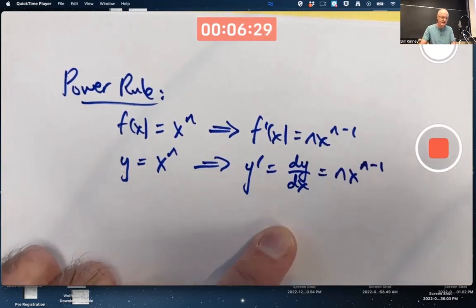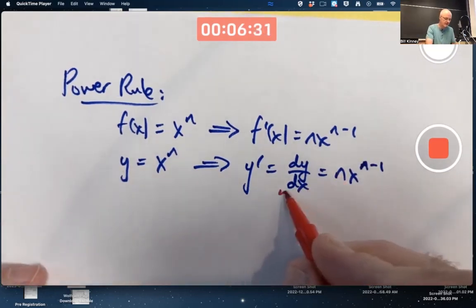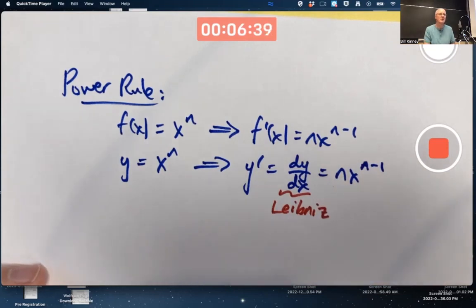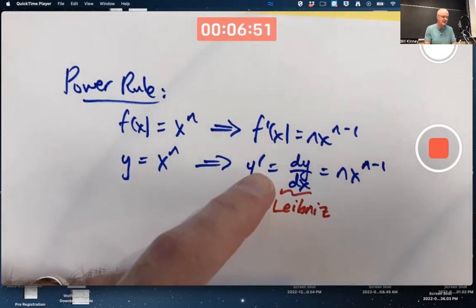Then you could write that the derivative of that with respect to x, which can be written in a couple different ways, either as y' or, here's something new, dy/dx. That equals n·x^(n-1). This is called the Leibniz notation for the derivative.